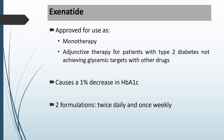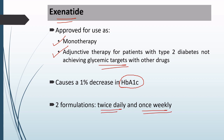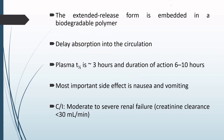The first drug we will discuss is Exenatide. It has been approved as monotherapy as well as adjunctive therapy for patients with type 2 diabetes who have not achieved their glycemic target with other drugs. These drugs decrease the level of HbA1c. There are two formulations: the first is given twice daily, and the second is given once weekly.